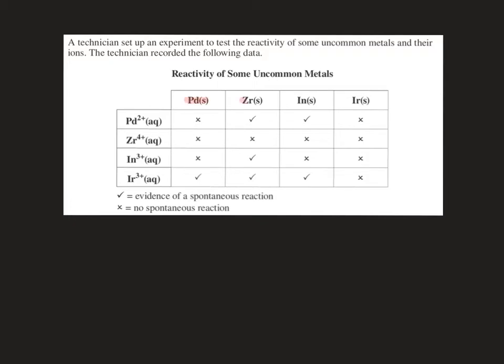If you recall these solid metals are typically reducing agents, so we're going to label this top row as our reducing agents. Down the first column we see palladium 2+, zirconium 2+, indium 2+, and iridium 2+. If you recall cations are typically oxidizing agents. So we're going to label this column our oxidizing agents.